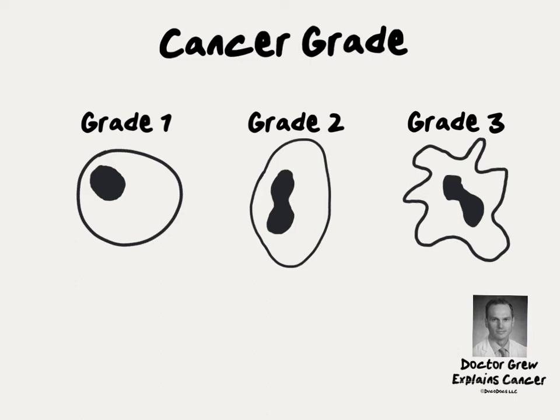Usually information about cancer grade is used to decide whether or not a patient needs additional treatment after the primary treatment for cancer — for instance, chemotherapy or radiation after surgery.